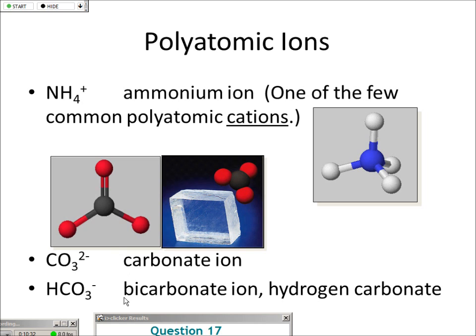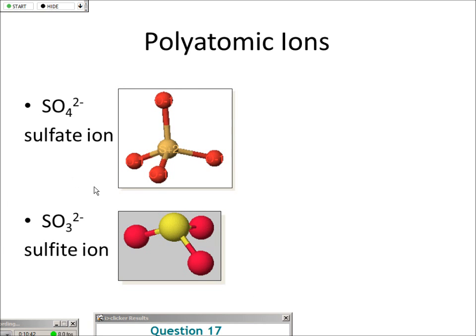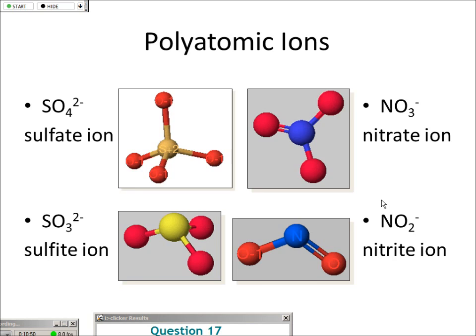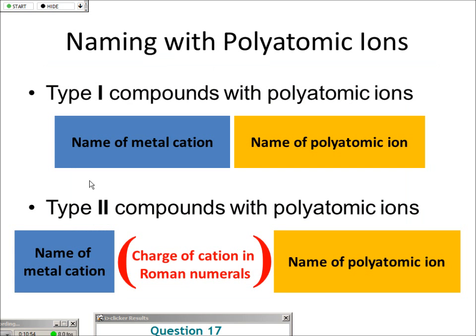For now, if polyatomic ions are on an exam, I will give them to you. I might require some memorization by the next midterm, but for this midterm you're fine. You need to know how to balance things, though. This basically follows type 1 and type 2 — non-ambiguity and ambiguity. So if it's something like sodium sulfate, sulfate has a minus 2 charge.